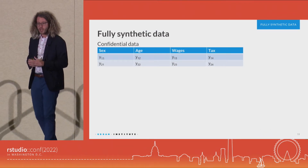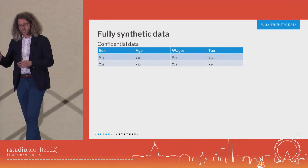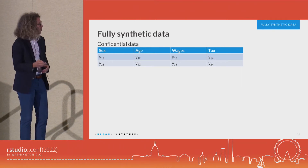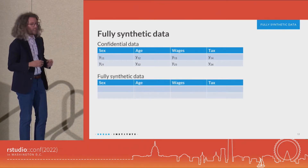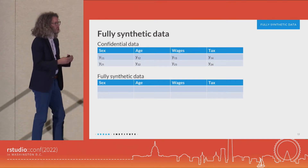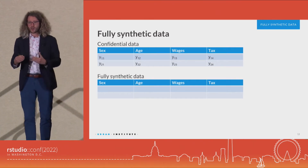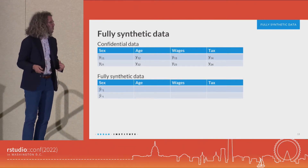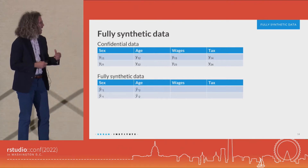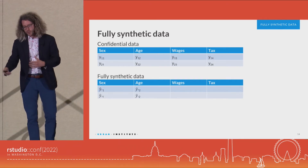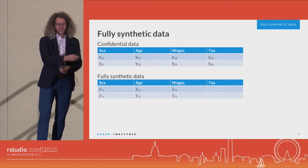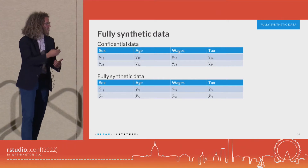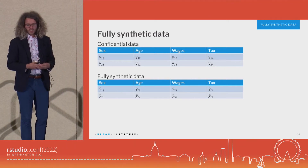Let's consider a much simpler example for now, where we have four variables and two observations — that's our confidential data set. The setup of what we're trying to do is create a new data set that has the exact same record layout. We're going to employ a sequential approach: first we'll sample sex with replacement, then create a predictive model to predict age conditional on sex, then predict wages conditional on sex and age, and finally predict taxes conditional on sex, age, and wages. It's a lot of predictive models.